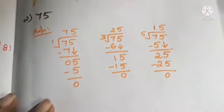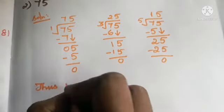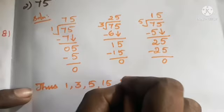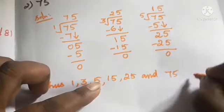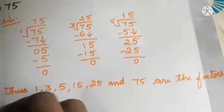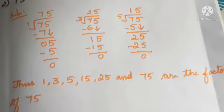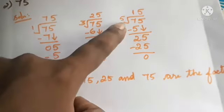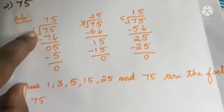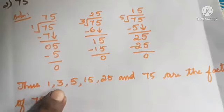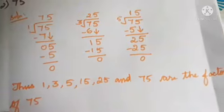From the division results, the divisors that gave remainder 0 are 1, 3, and 5, with corresponding quotients 75, 25, and 15. Thus the factors of 75 are: 1, 3, 5, 15, 25, and 75.